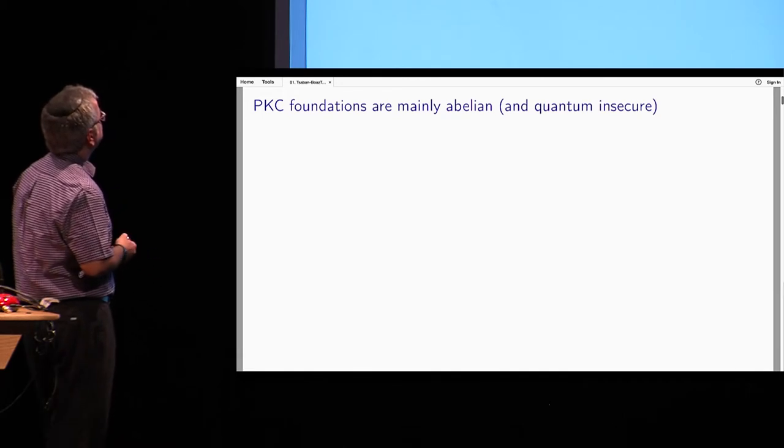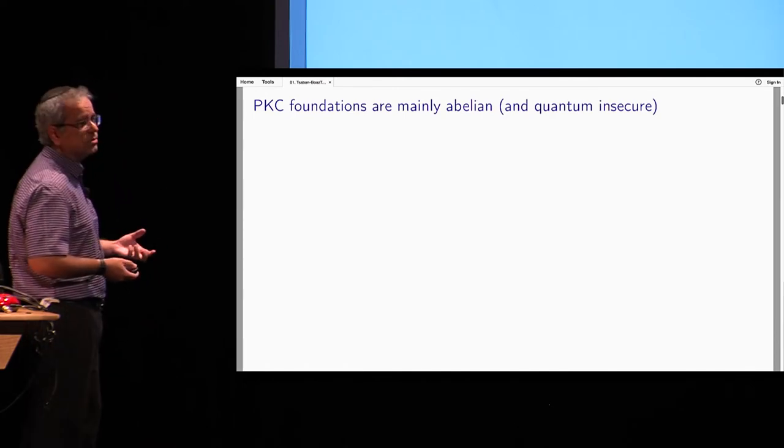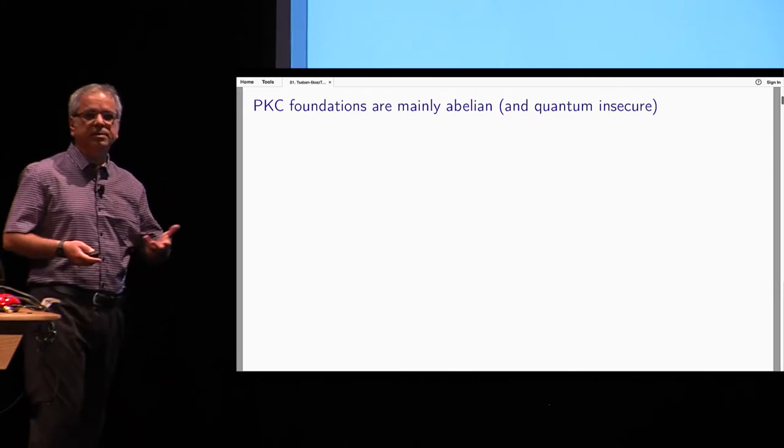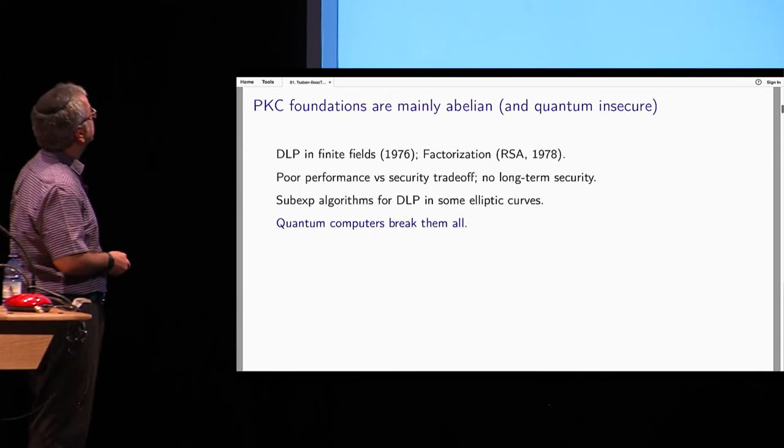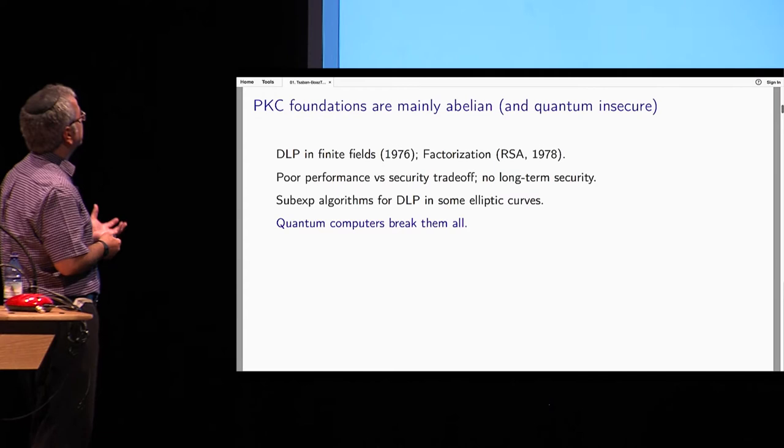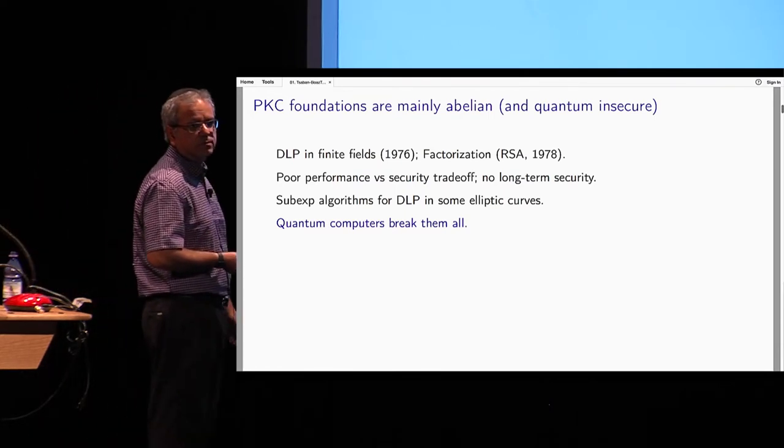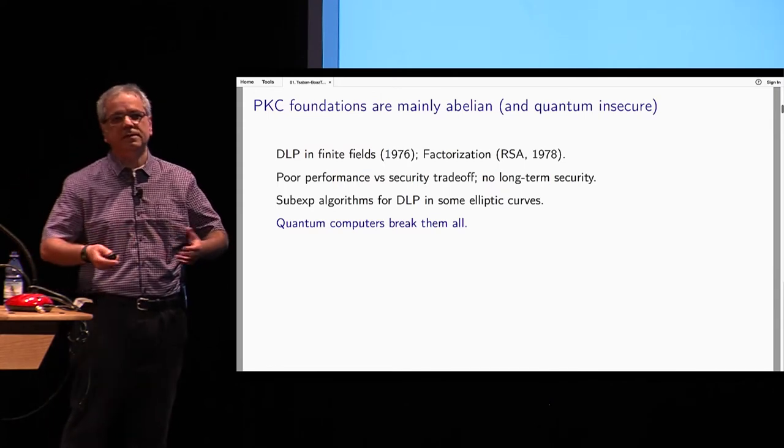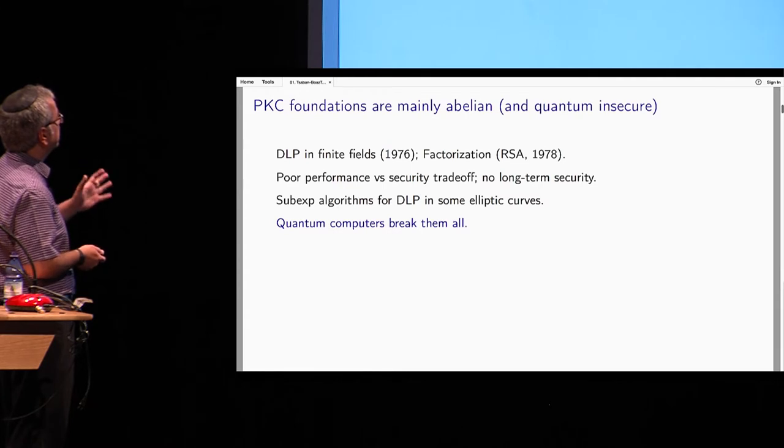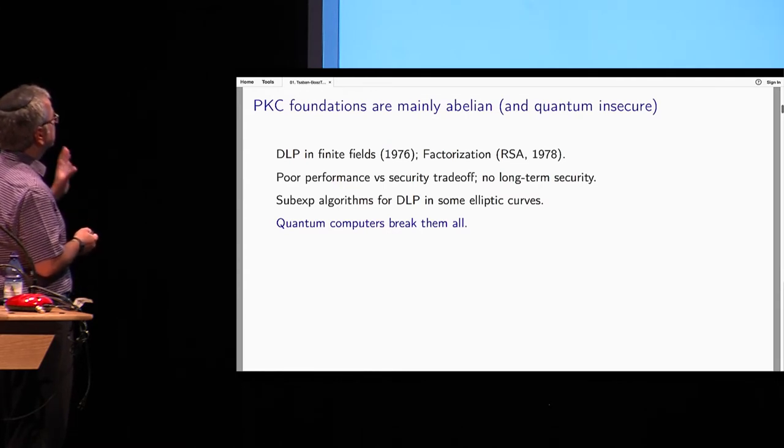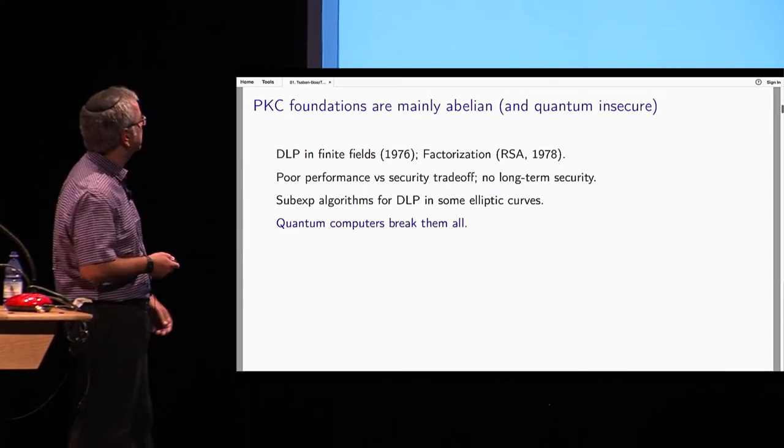Very roughly, we can claim that public key cryptography, the foundations, the building blocks, the problems upon which we are building PKC is mainly abelian. The building blocks are mainly abelian. And of course, many people said quantum insecure. What we have in practice, we have discrete logarithm problem in finite fields or also in elliptic curves and factorization. For many years, we don't have much more than that for key exchange protocol or some basic public key cryptography.